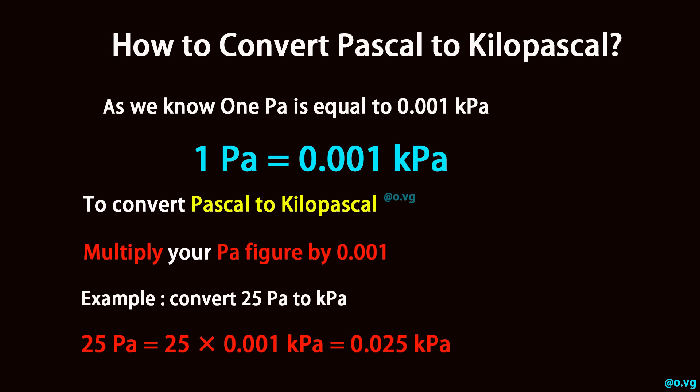To convert Pascal to kilopascal, multiply your pascal figure by 0.001. For example, convert 25 pascal to kilopascal: 25 pascal is equal to 25 times 0.001 kilopascal, which equals 0.025 kilopascal.